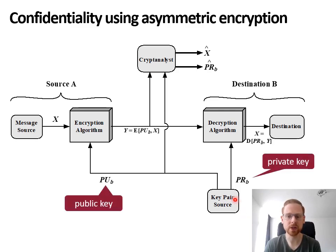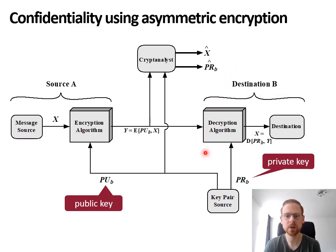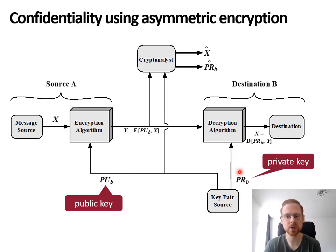There is a public and a private key, which together make up the key pair. For confidentiality, the public key is used by the encryption algorithm. The source or sender A will use the public key in the encryption algorithm to encrypt the message X, resulting in a ciphertext Y which is sent over the network. The decryption algorithm at the destination or receiver B uses the private key to decrypt the message. This means that anyone with access to the public key could encrypt messages, but only the intended recipient with access to the private key can decrypt the message. The destination should generate the key pair and then share the public key with the sender.